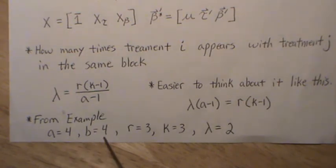K is the number of observations within a block, and lambda is the number of treatment pairs, which is two in our example.